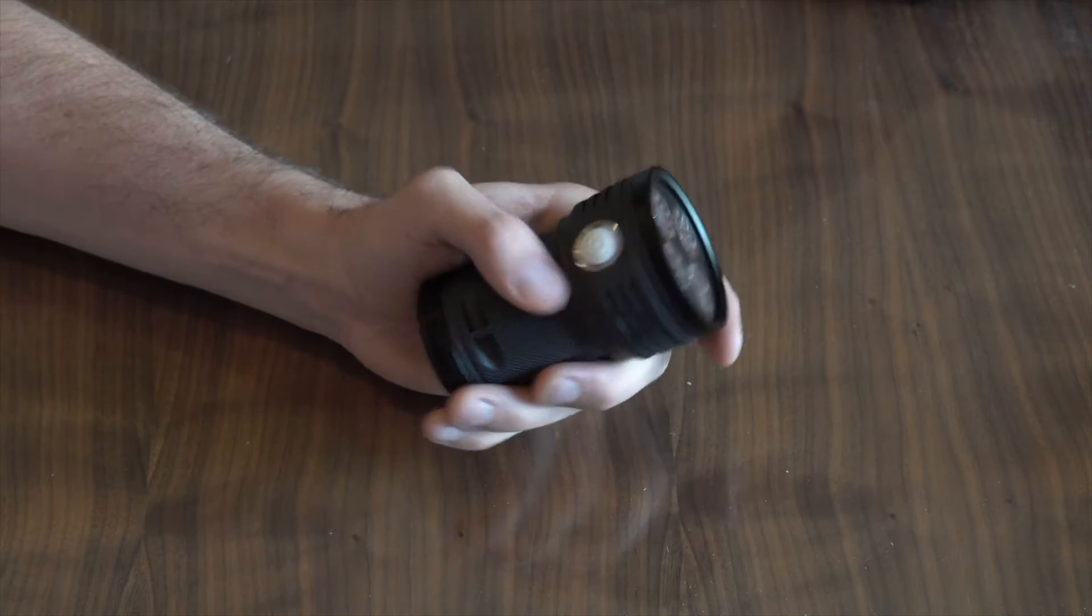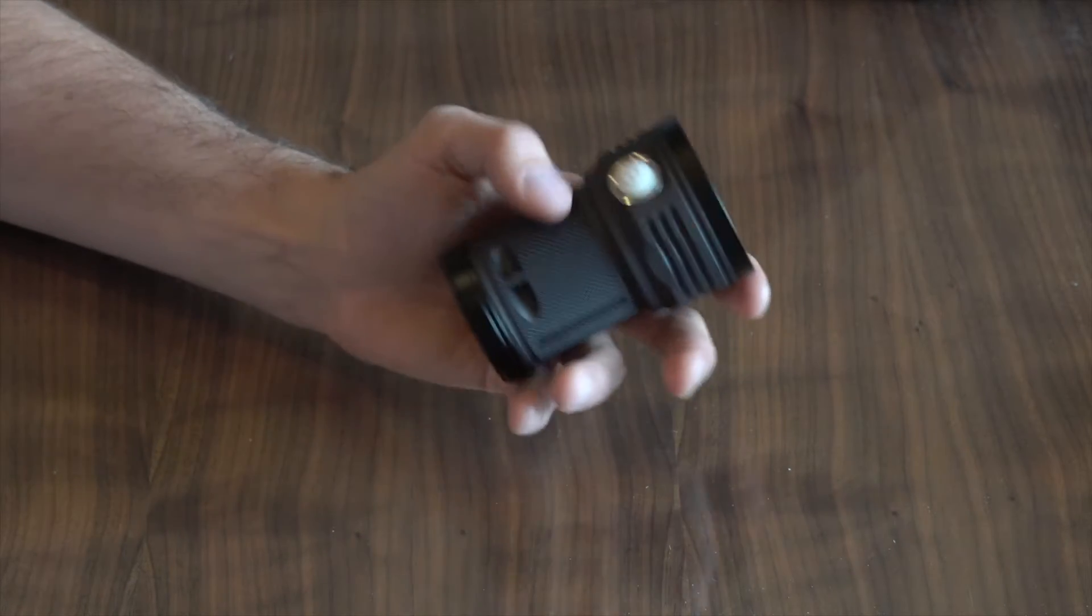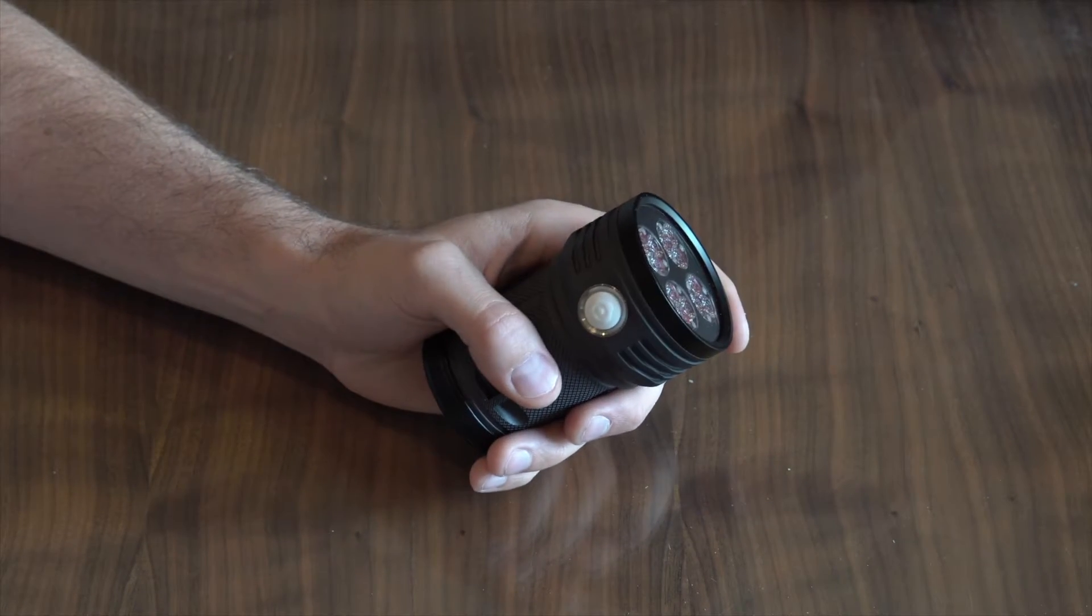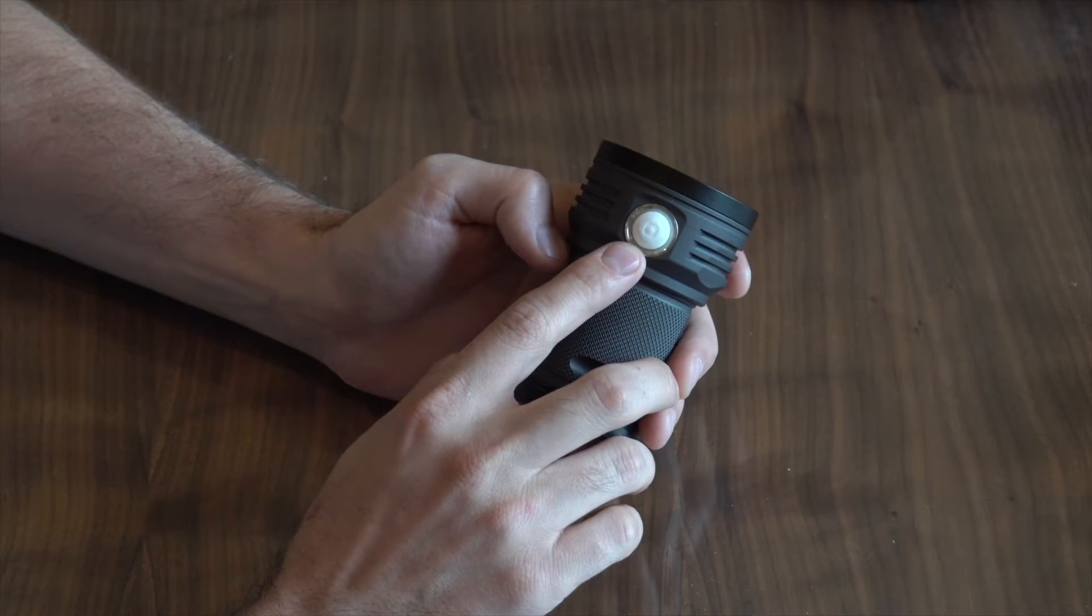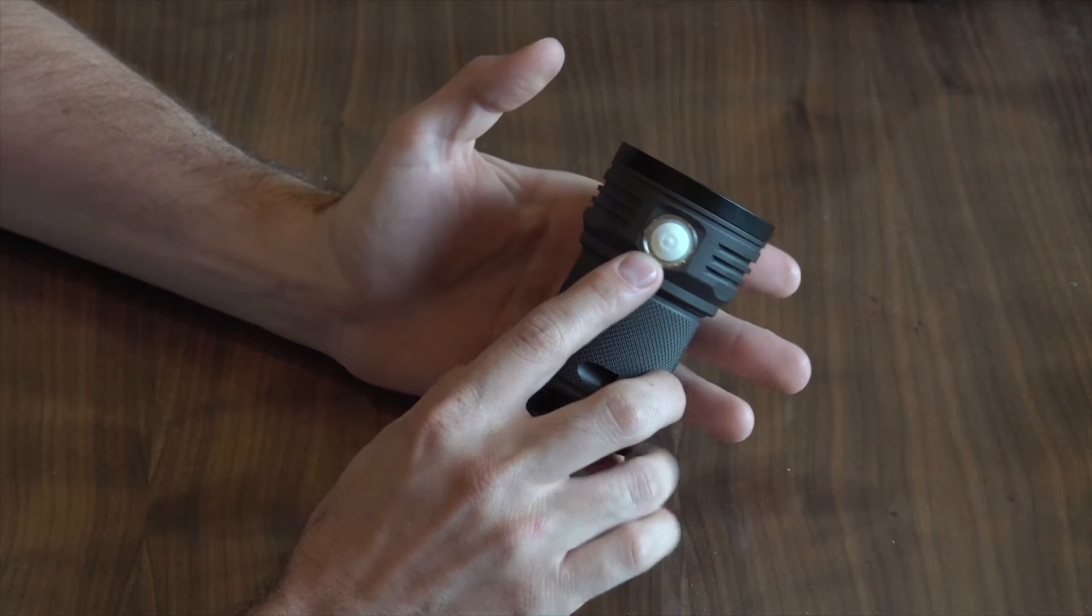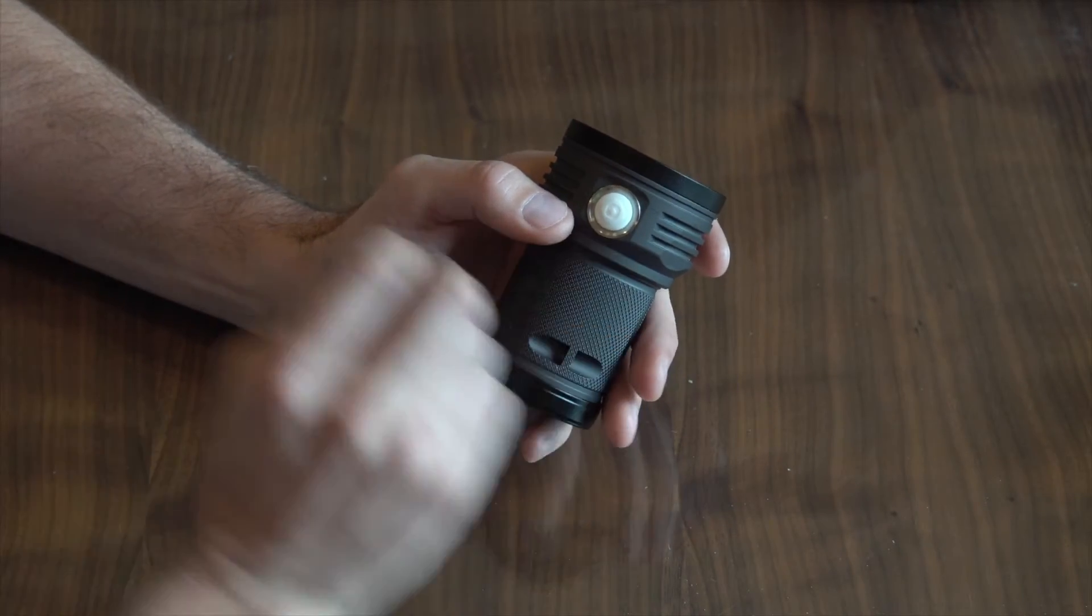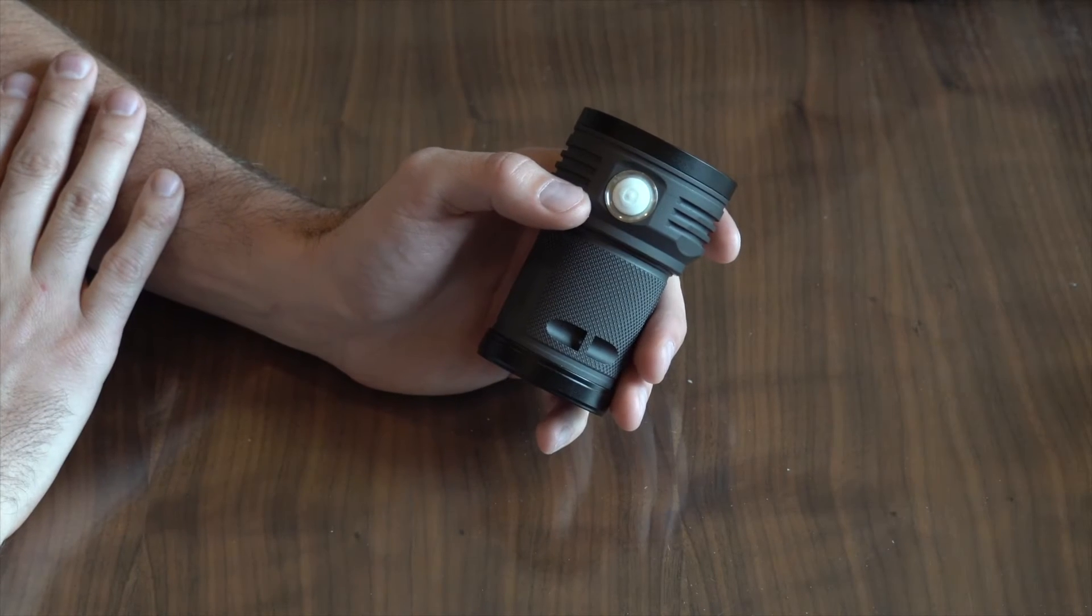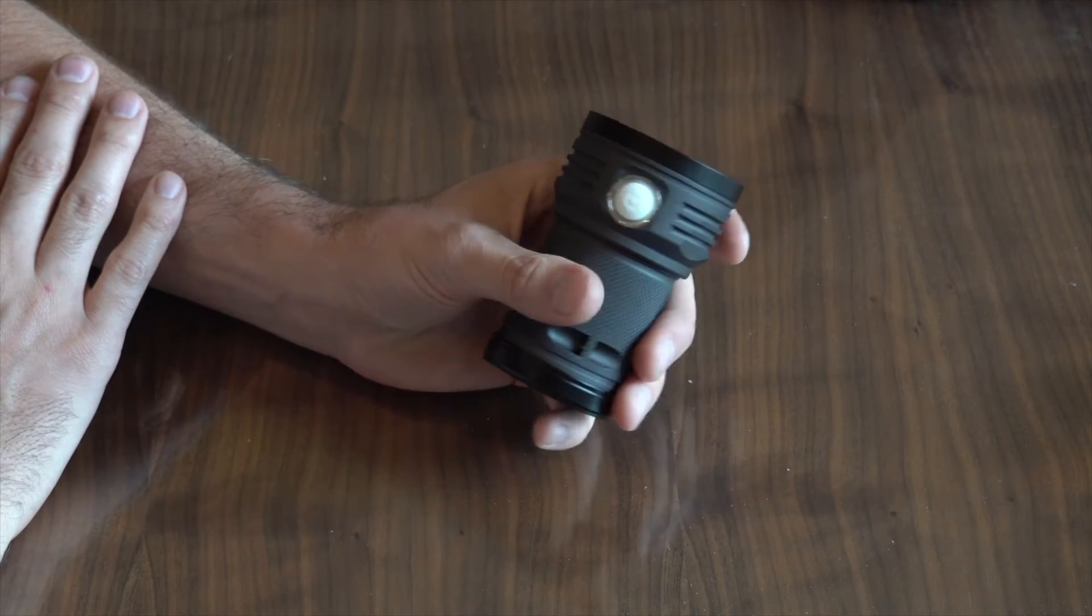Now that you understand the system of clicks and holds I'd like to show you a few of the things that people commonly like to change on their flashlight. The first of which is the function of the switch indicator light. You can see that right now the beacon function is turned on. This means the light will blink every few seconds to show the location of the light but also the state of the battery charge.